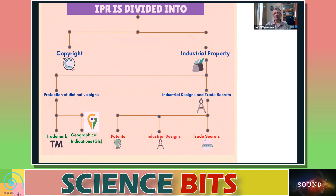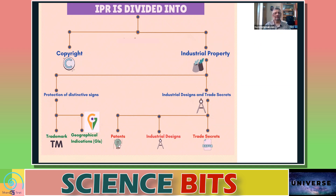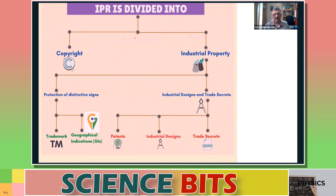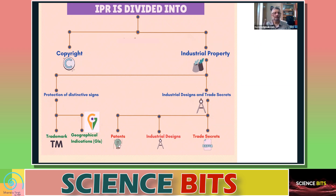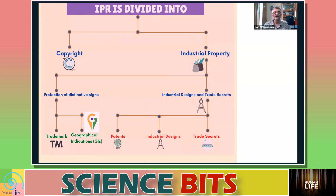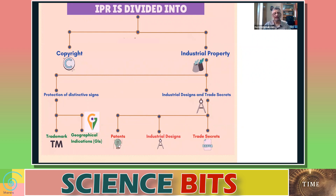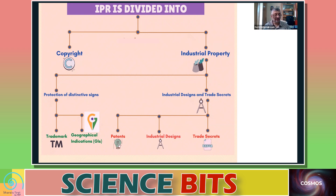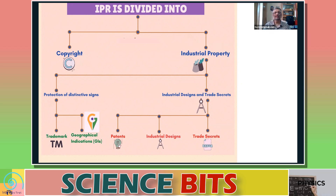When you look at industrial property, there are broadly two big categories. One is distinctive signs — things like, for example, a trademark. So if somebody uses Tata's trademark, then it's infringement, because buyers will mistake that they are buying a Tata product but they'll actually be buying something else. So trademark infringement is one kind of issue. Trademark is one kind of distinctive sign given as an industrial property.